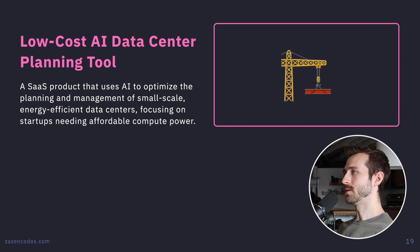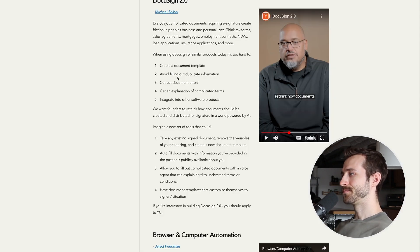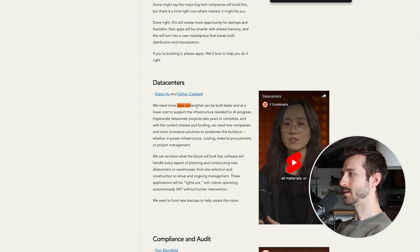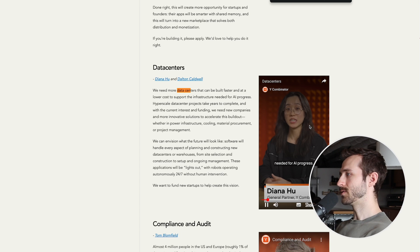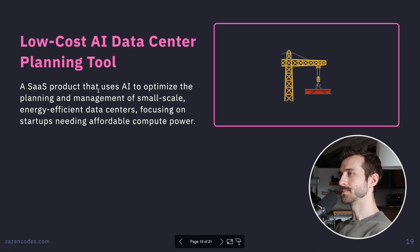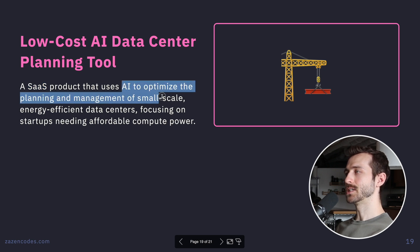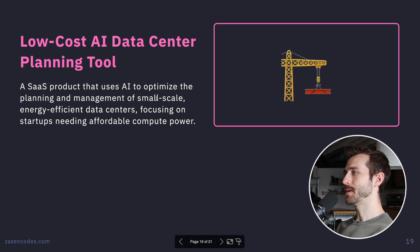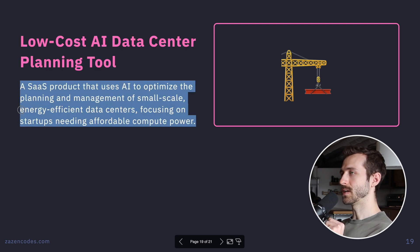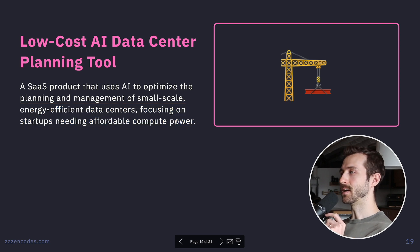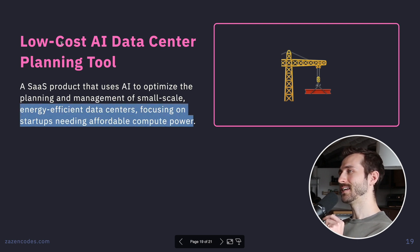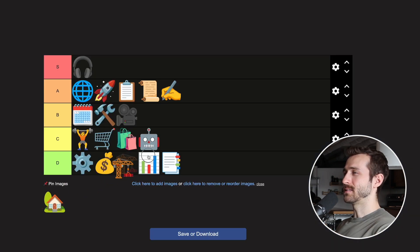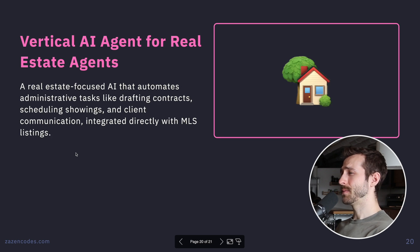Low-Cost AI Data Center Planning Tool — a SaaS product that uses AI to optimize the planning and management of small-scale, energy-efficient data centers. This came from YC and is tied to the push for faster and cheaper infrastructure. I don't see it as a SaaS product — more like a custom B2B thing. I'm C-tiering that one.